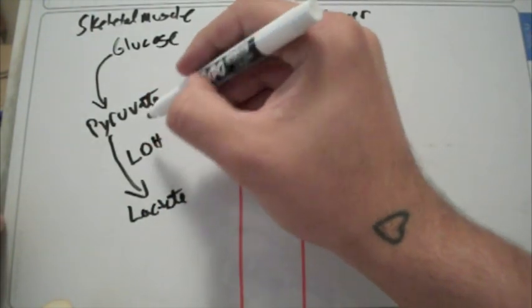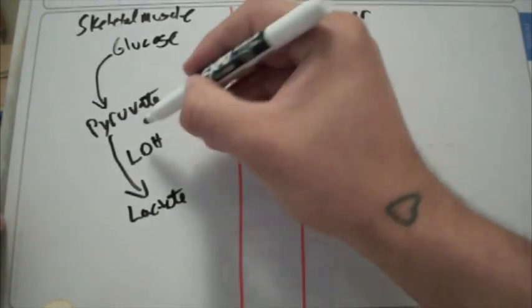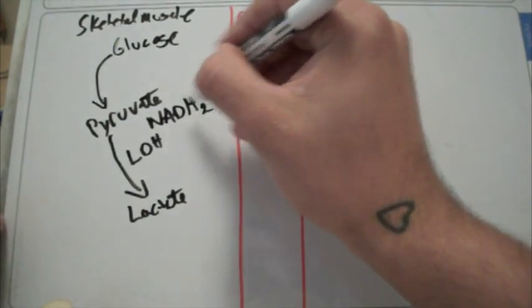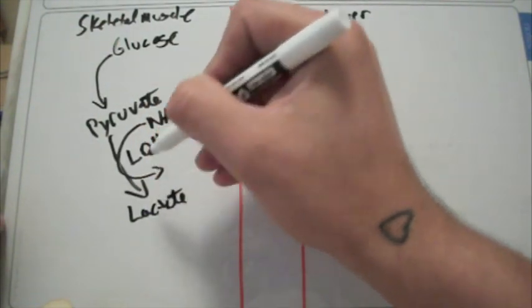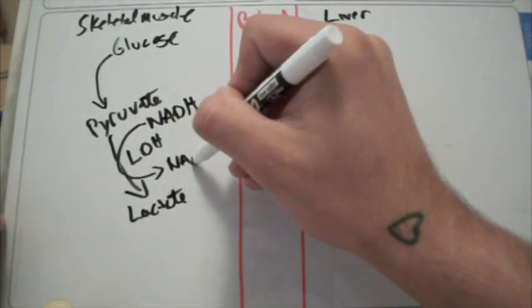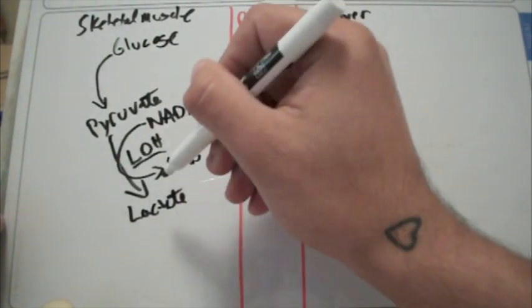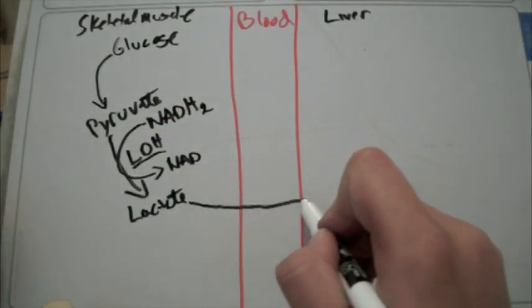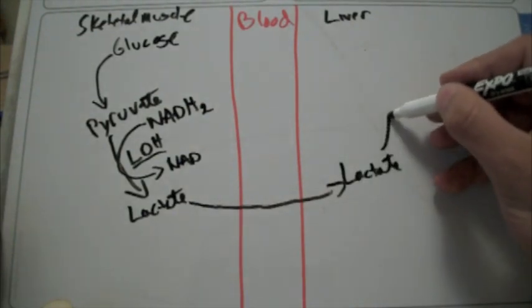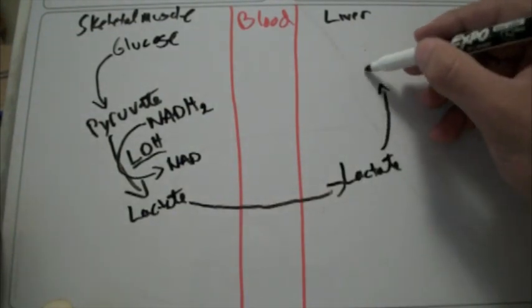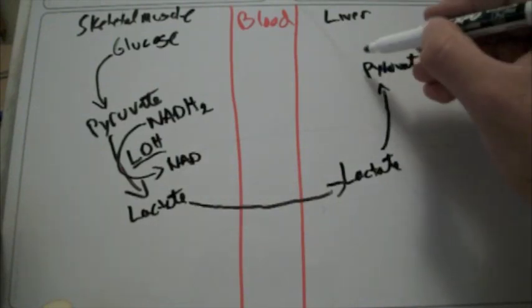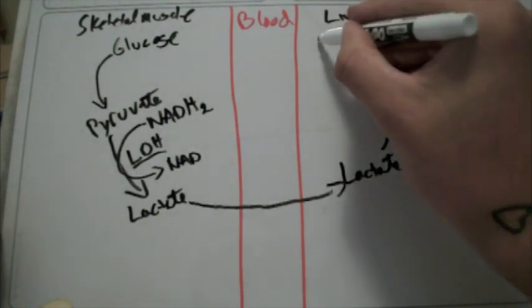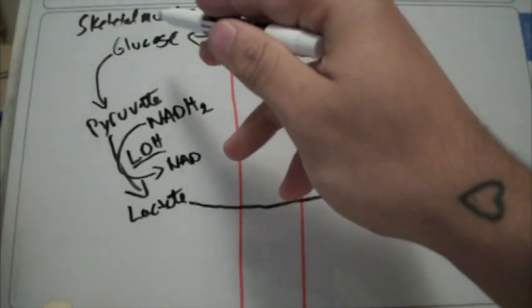Lactate dehydrogenase — it's a dehydrogenase, so it's going to take hydrogen to give us NAD. Remember, lactate dehydrogenase. From this lactate, it's going to go through your blood, end up in your liver, and get turned into pyruvate, then glucose through gluconeogenesis, back to the blood, back to your muscle.